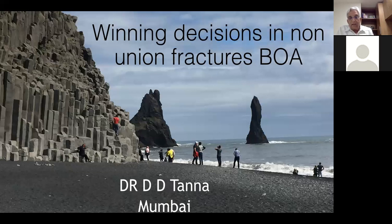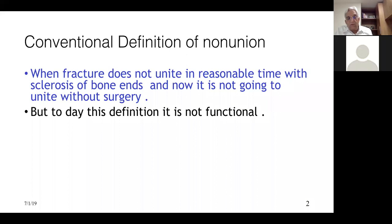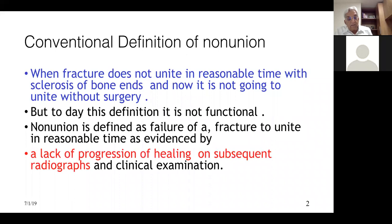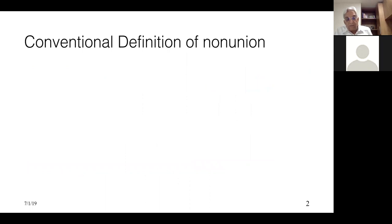I start with the conventional definition of non-union. What we have been teaching is: when the fracture does not unite in a reasonable time with sclerosis of the bone ends, and it is not going to unite without surgery. Today this definition is not fully functional — non-union is defined as failure of a fracture to unite in a reasonable time when the fracture is slowly not uniting over successive x-rays taken every month or so. If it does not unite in two or three months, we consider it time to interfere.